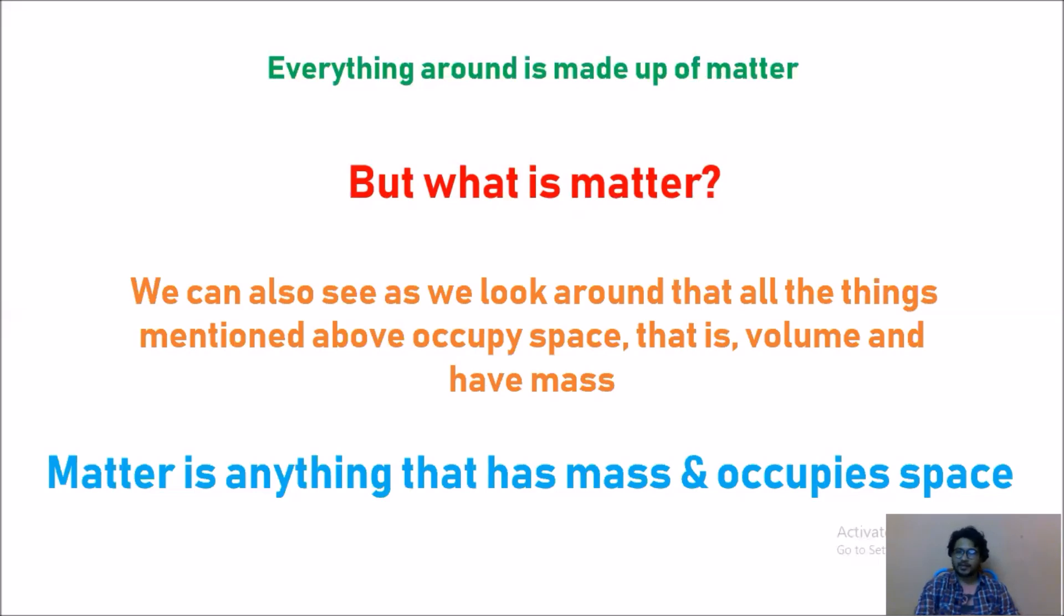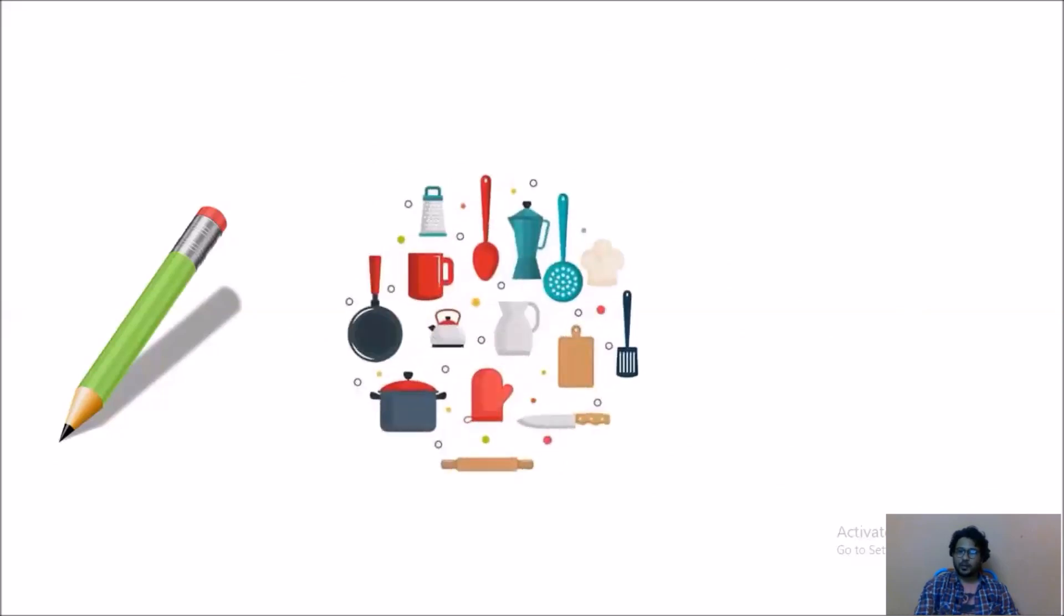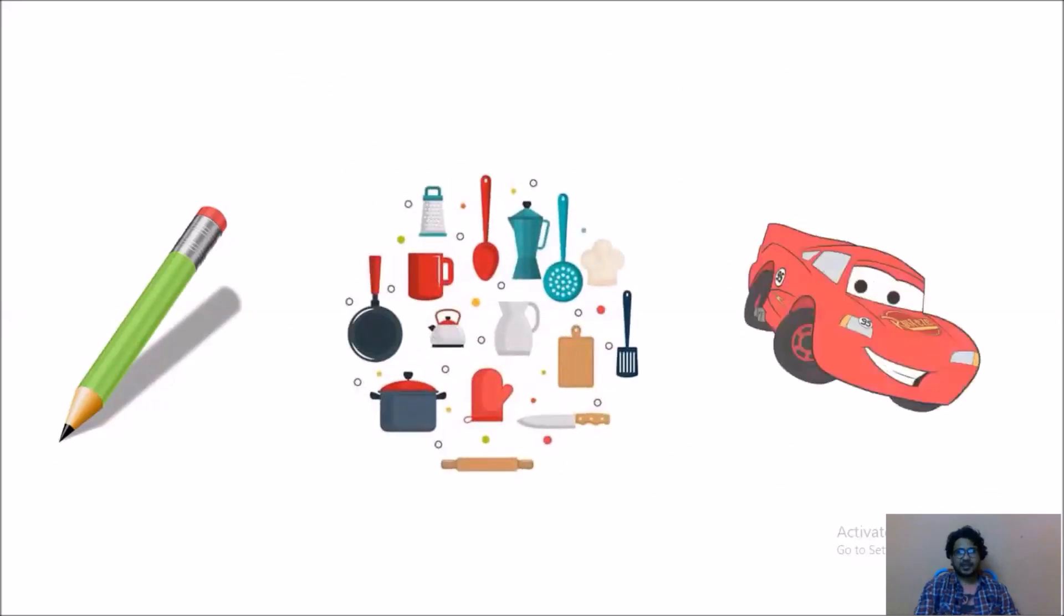If they ask you what is the definition of matter, you can say this definition: matter is anything that has mass and occupies space. Examples like pencil, objects which we are using in our house, car, all these objects have mass and occupy some space hence we can say these are matter.